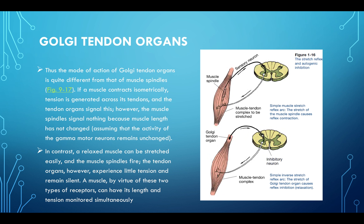The mode of action of GTOs is different from muscle spindles. If a muscle contracts isometrically, tension is generated across its tendons and tendon organs can signal this. However, muscle spindles don't do much because muscle length hasn't changed — so during isometric exercise, you're more activating the GTO than the muscle spindle. GTOs have more impact on CNS changes than muscle spindles when well activated. In contrast, a relaxed muscle can be stretched easily, muscle spindles fire, but tendon organs experience little tension and remain silent. A muscle, by virtue of these two receptor types, can have its length and tension monitored simultaneously.